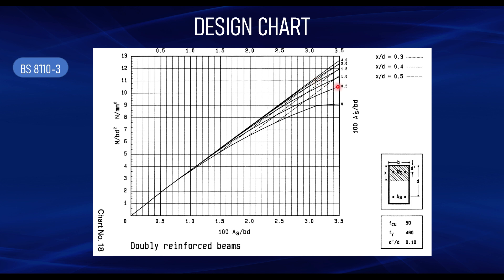On the graph, along the left-hand vertical axis you have the moment over bd². This chart is only used to determine tension and compression reinforcement. Along the horizontal axis at the bottom, you determine the tension reinforcement, and along the vertical axis to the right, you determine the compression reinforcement. The tension reinforcement is denoted by As and the compression reinforcement by As'. To read this chart you need to determine your fy, fcu, and d' over d.